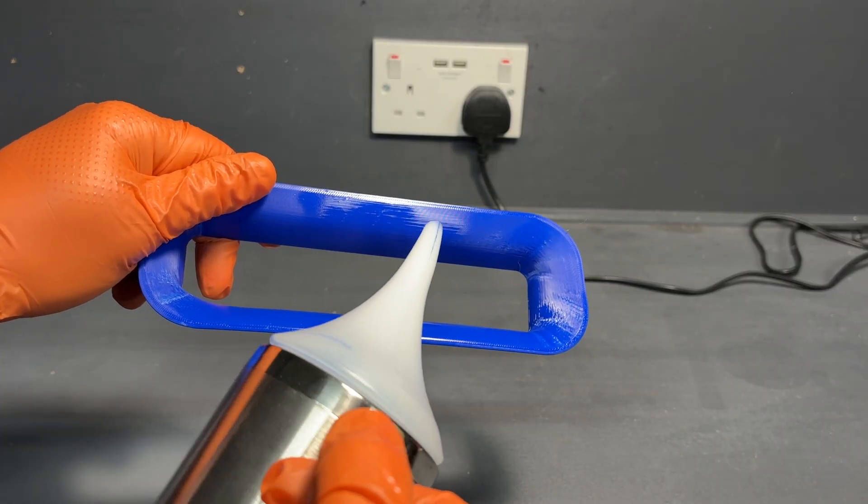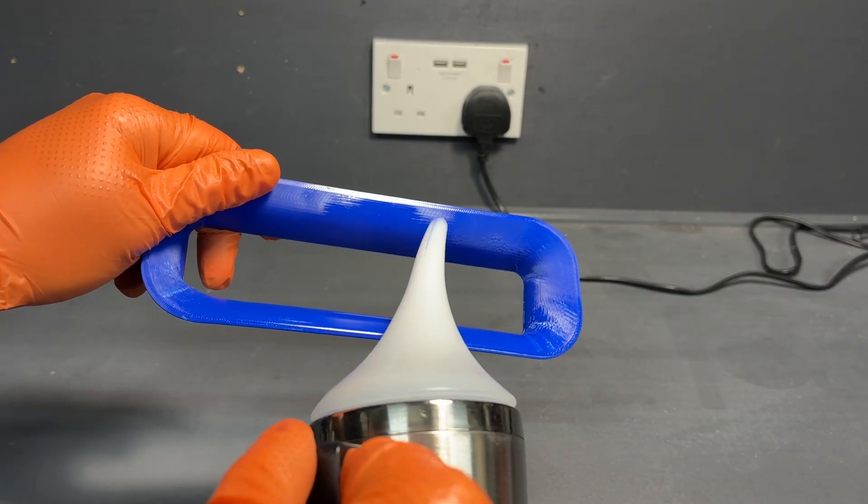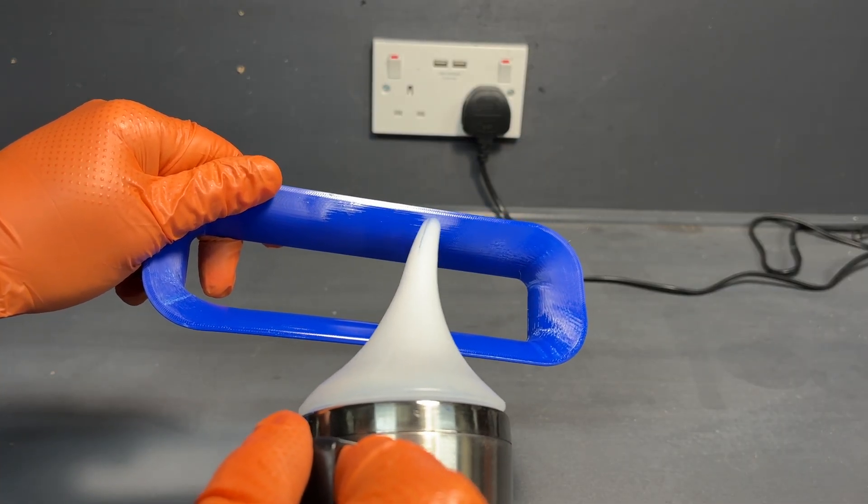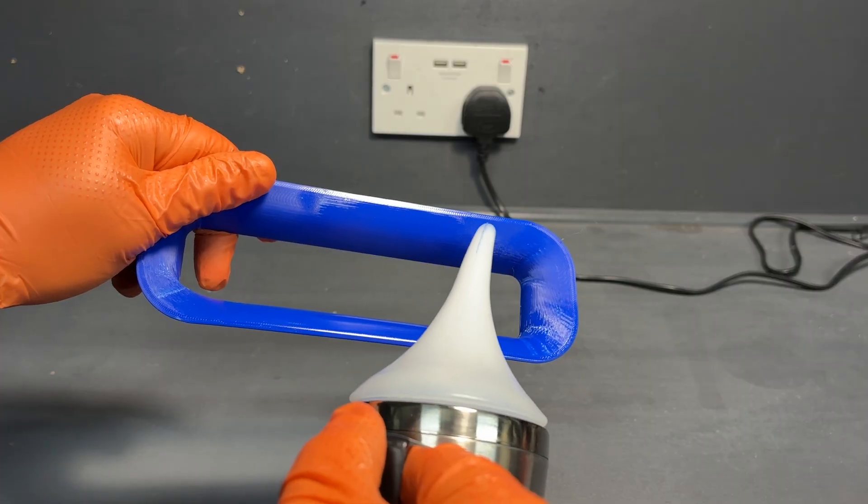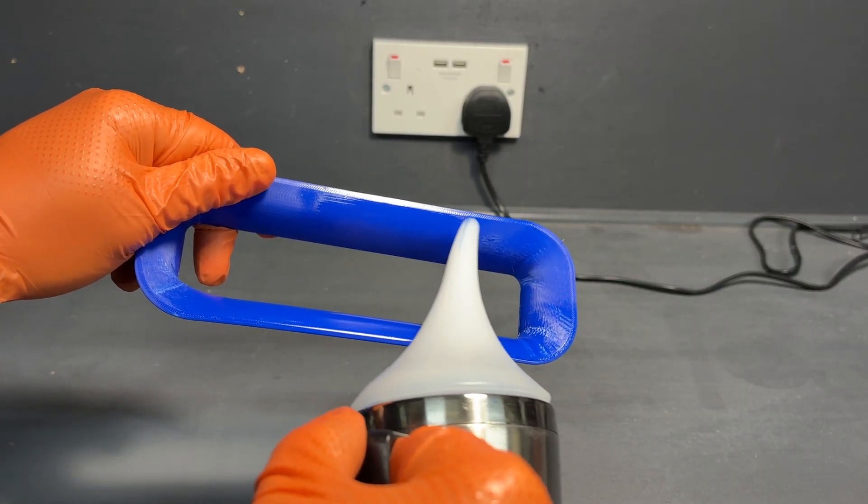If you touch this while it's wet—within a couple seconds of it being softened—you'll mark it. So you need to let it harden up again, which takes about 10 seconds. It's not a long process; you can do this whole thing in about four minutes.